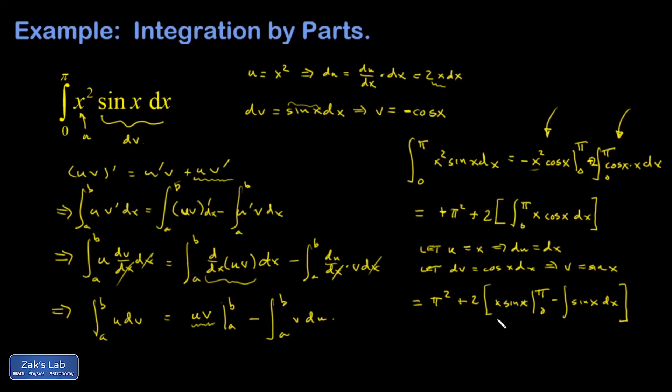And again, I like to evaluate right away on this piece. And when I plug in the pi, I get sine pi, and that's 0. And when I plug in 0, I get 0 times sine of 0, which is another 0. So this whole piece vanishes. So I have pi squared, and then I have a negative 2 in front of that integral, minus 2 times this integral, which is negative. I lost my limits of integration there. Negative cosine x.